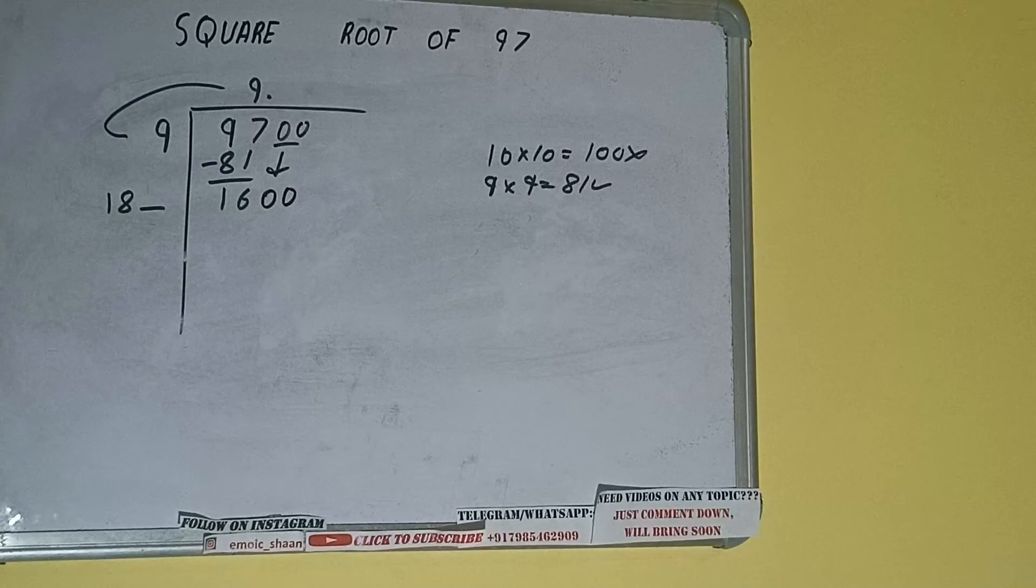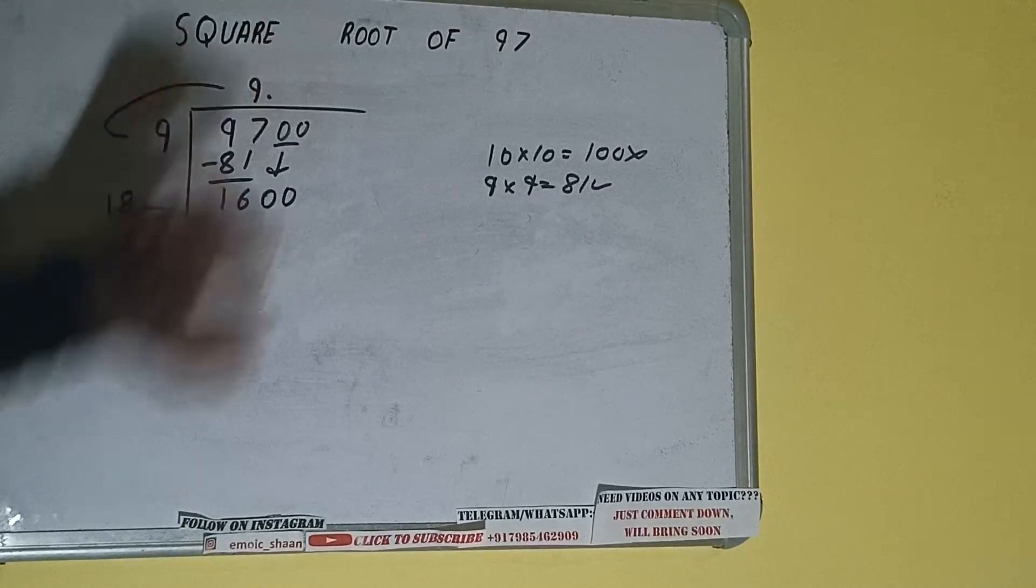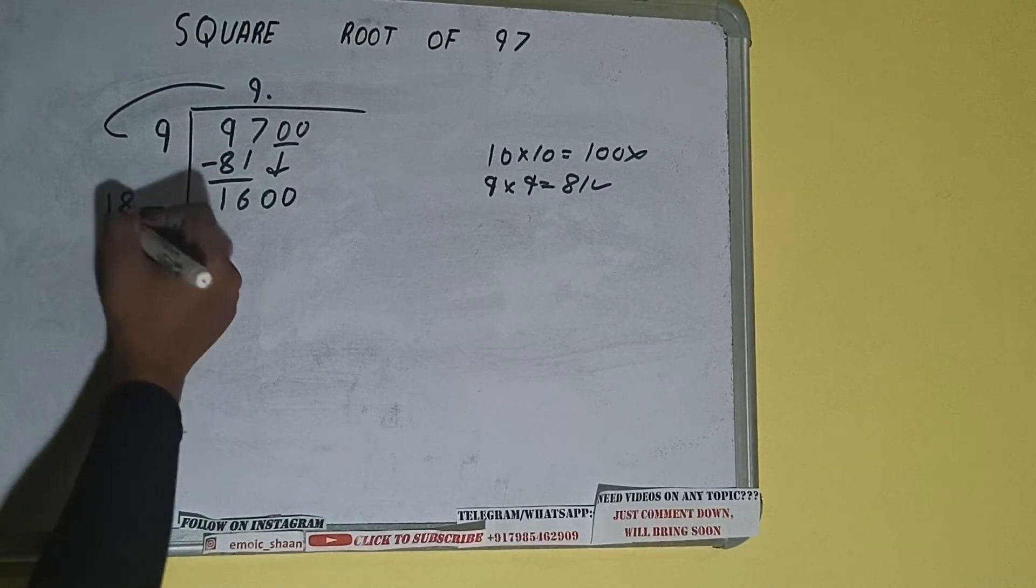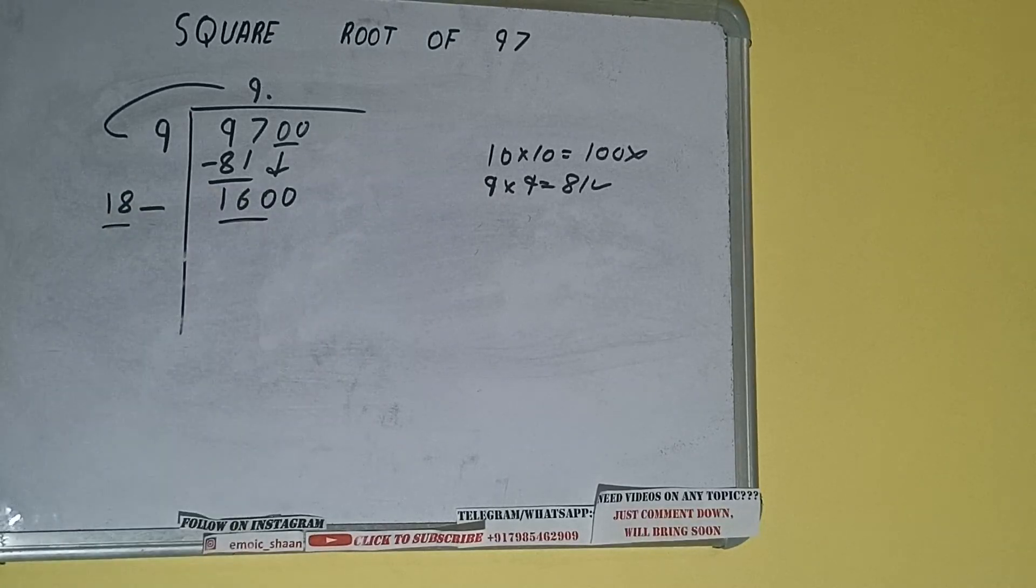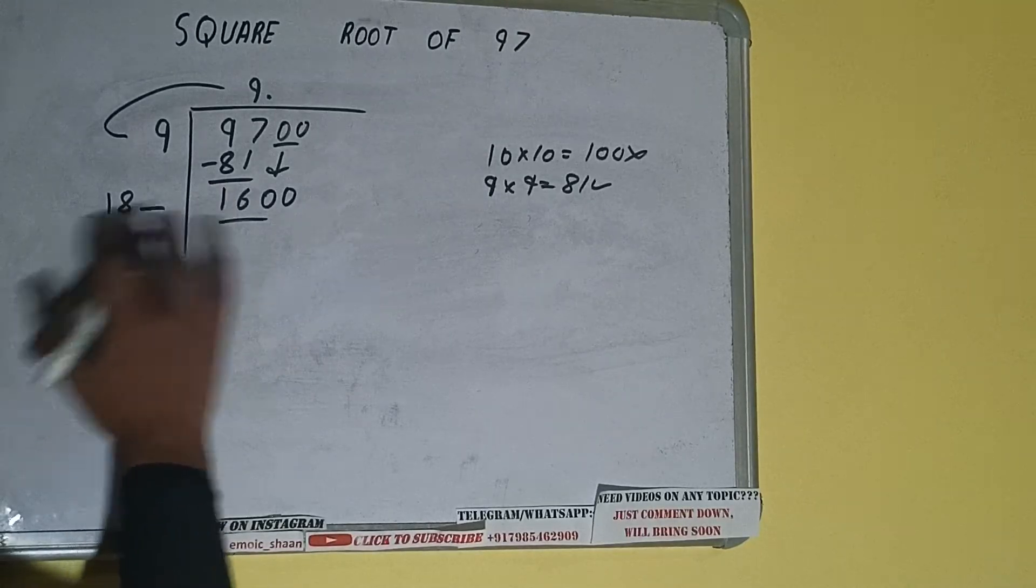Our number will become 1600. Now whatever number we write here, we have to write here also. So we can compare this 18 with this 160. So 18 nine times is 162, which is bigger than this, so we cannot try 9 times.